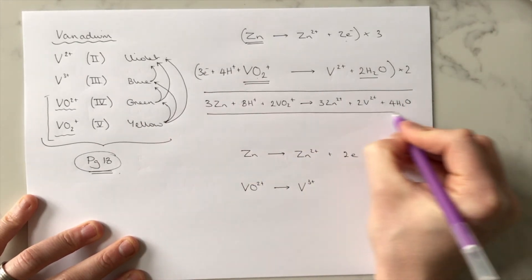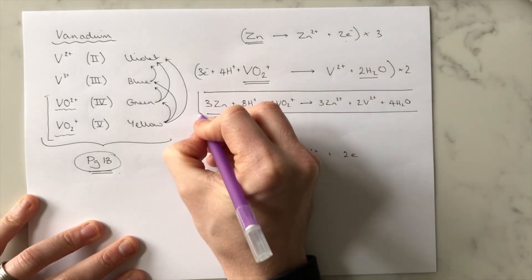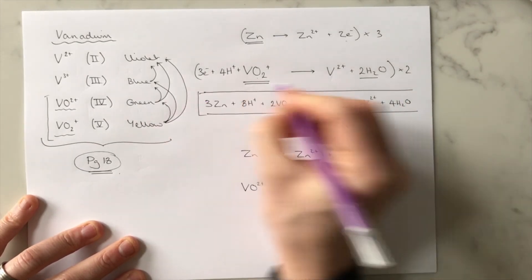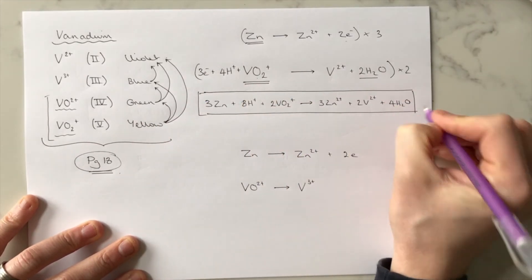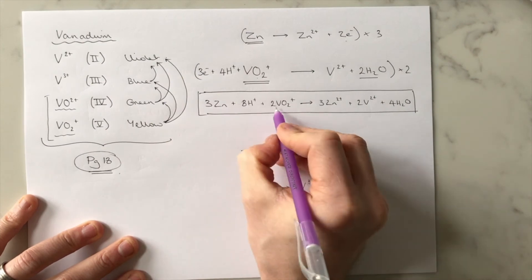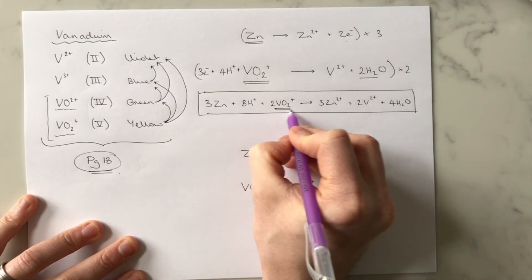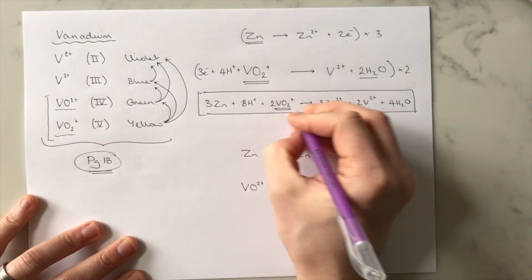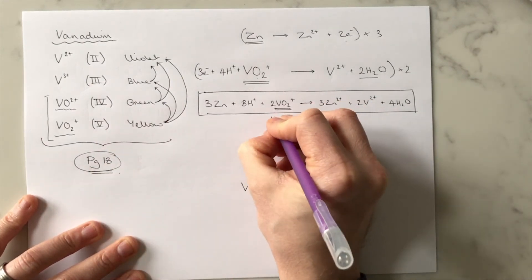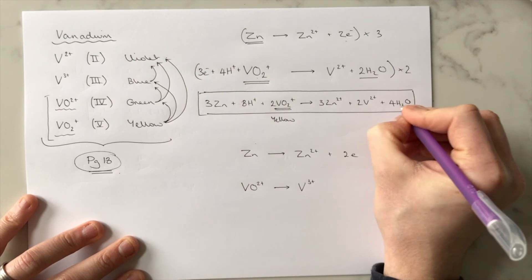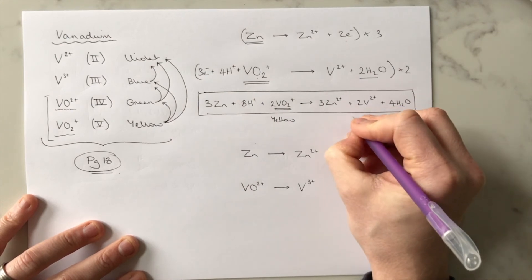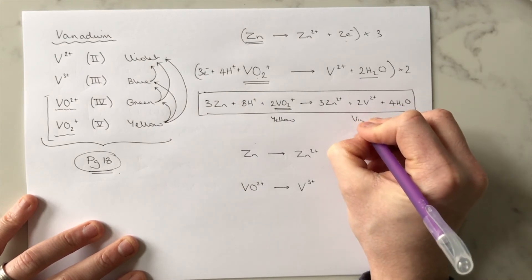Combining those gives: 3Zn + 8H⁺ + 2VO₂⁺ → 3Zn²⁺ + 2V²⁺ + 4H₂O. For the observation: vanadium in its +5 oxidation state is yellow, and vanadium in its +2 oxidation state is violet.